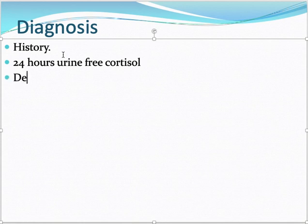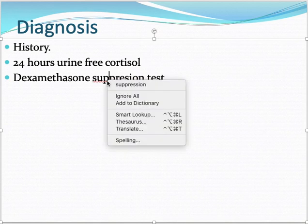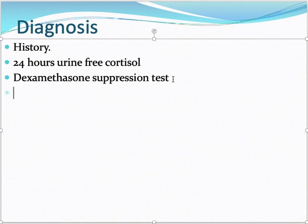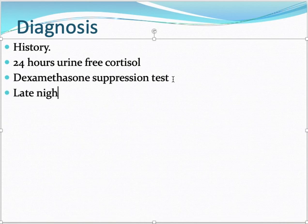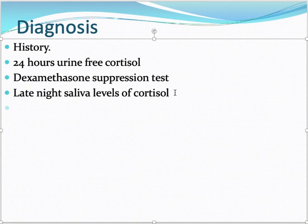We then perform a dexamethasone suppression test: giving dexamethasone should suppress cortisol production and ACTH levels in a normal body. Currently, late-night salivary cortisol levels are also checked, as cortisol levels should be lowest at night — elevation at that time is significant.